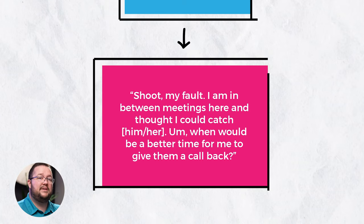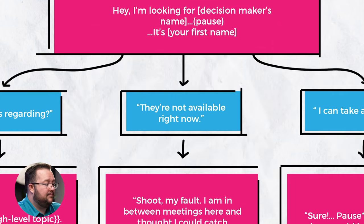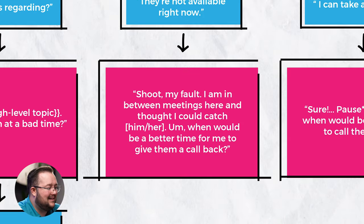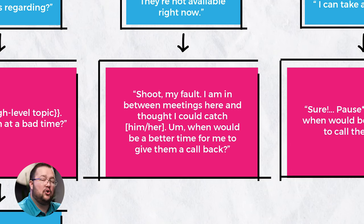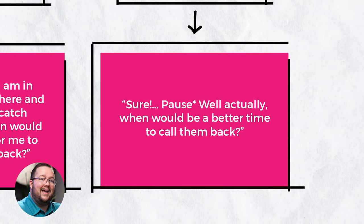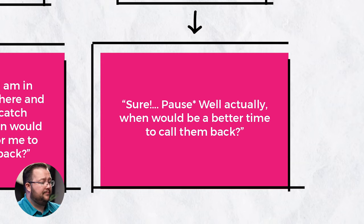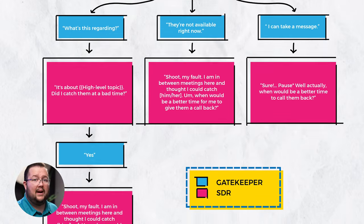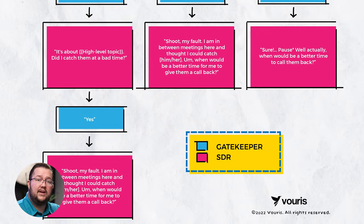The key is to push off any potential sales pressure. For 'They aren't available right now' — 'Shoot, my fault. I'm in between meetings here and I thought I could catch her. When would be a better time for me to give them a call back?' Same flustered energy, same goal — remember our second objective: get a time to call back. For 'I can take a message' — 'Sure... well actually, when would be a better time to call them back?' We say 'sure' first, which makes the gatekeeper ready to take a message, and then we pivot — it throws them off their script and we're more likely to get that callback time. From there, follow your order of objectives, ask those qualification questions, and if relevant, ask the discovery questions after you've gotten that time to call back.